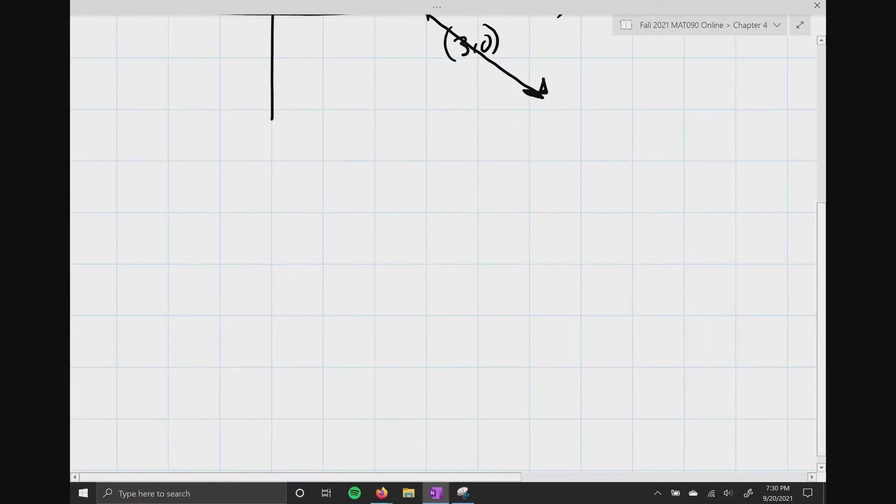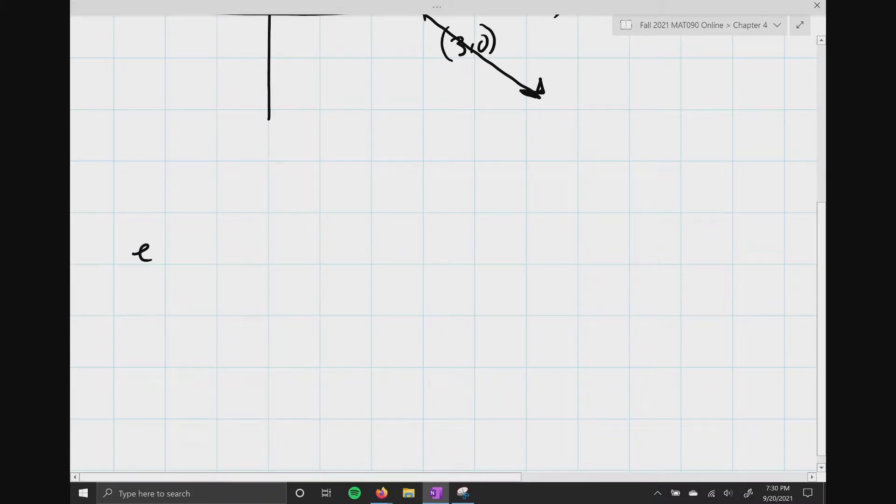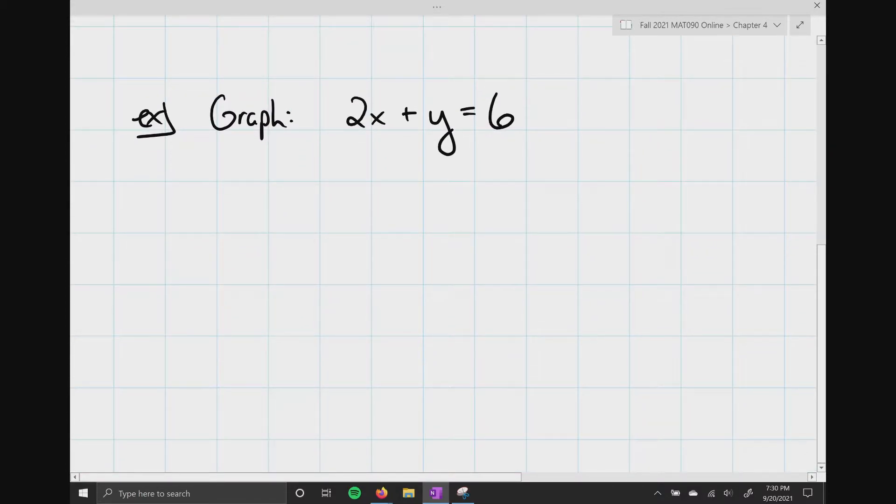So, if I gave you a graph, or if I gave you this example here, and I just said graph the following. So, graph. And we're going to say 2x plus y equals 6. If I asked you to graph that. Well, you and I both know that if we wanted to, we can go ahead and we can create this table here, and just go ahead and find all these ordered pairs. But let's be honest. It takes a lot of math. And, the more math we do, the more likely a mistake may come up.